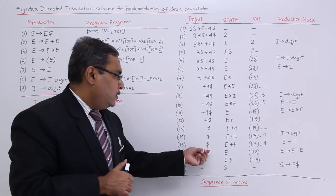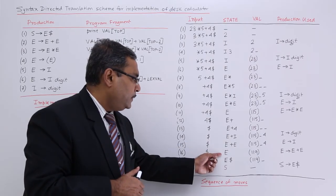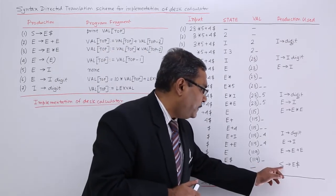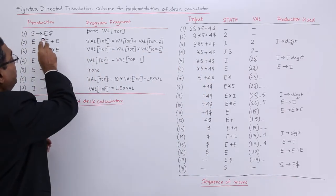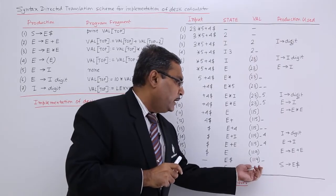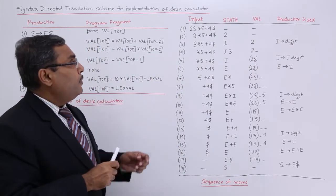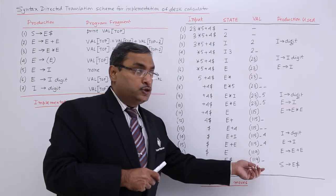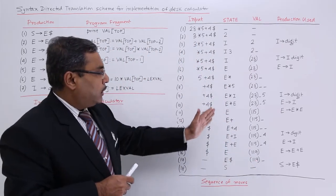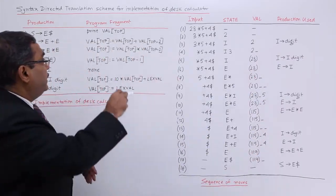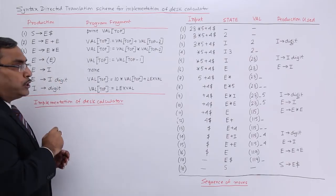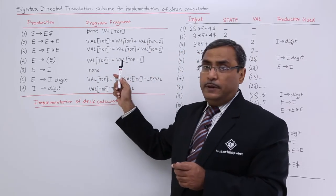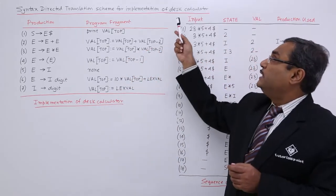Next, only dollar is remaining. E has come, then dollar is placed, giving E dollar. E dollar will be replaced by S using the production rule S produces E dollar, and the semantic action is print val[top]. The val[top] content is 119, so 119 will get printed. In this way the full expression 23 star 5 plus 4 has been evaluated and we get 119. The detailed steps, production rules, and corresponding semantic actions have all been shown. I think you got the idea how this syntax directed translation scheme has been used for the implementation of this DEX calculator. Thanks for watching.